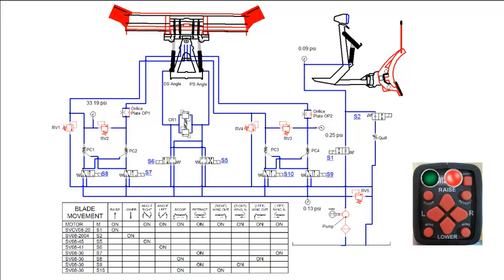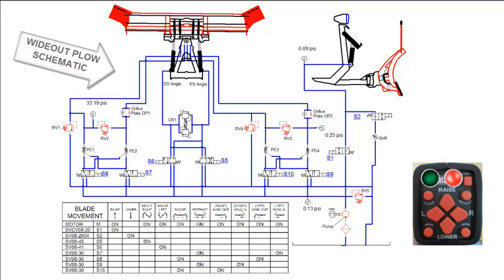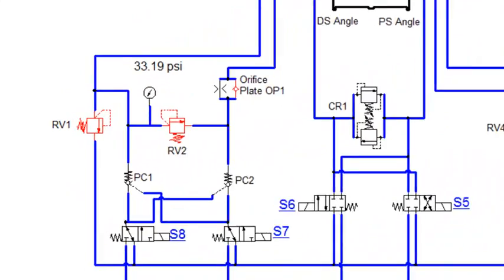A schematic is a line drawing made up of a series of symbols and connections that represent actual components in the hydraulic system. In short, they explain how a circuit functions. Being able to read schematics correctly is the most important element of hydraulic troubleshooting. We will use the wide-out plow hydraulic schematic to identify these symbols.